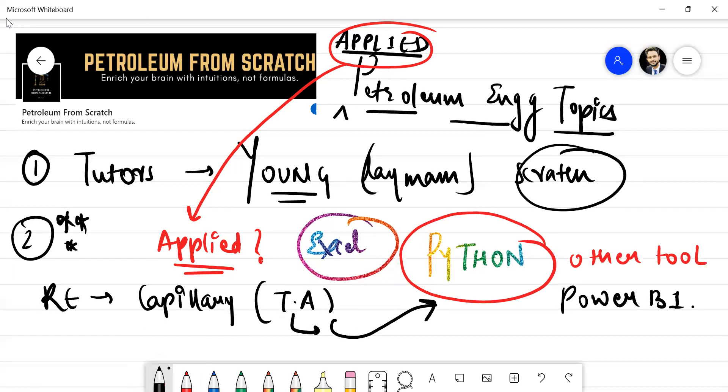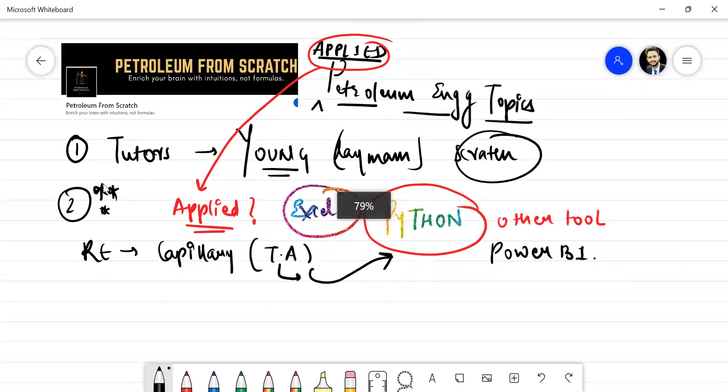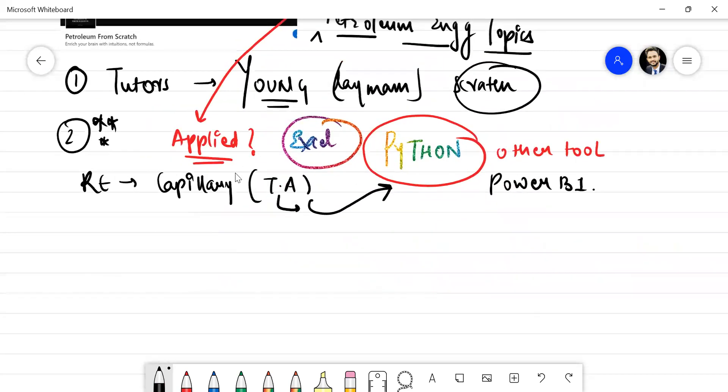Similarly, if there is, let's say if there is an example, if we are referring to LP Dake and we are talking about well testing, we are talking about material balance, all these things can be solved in either Excel or Python.